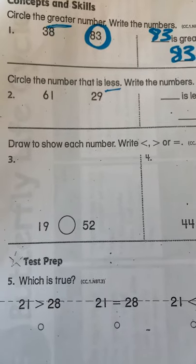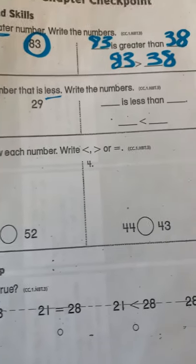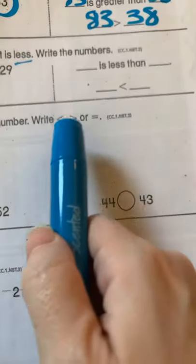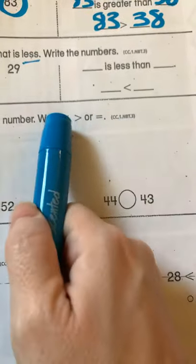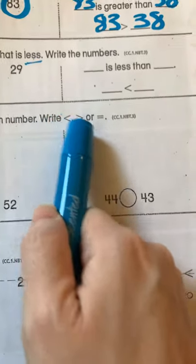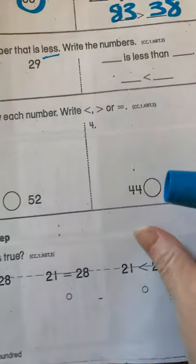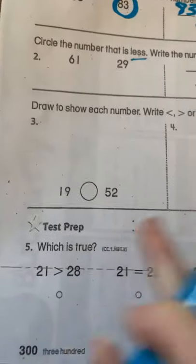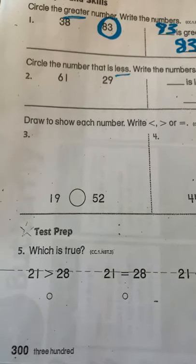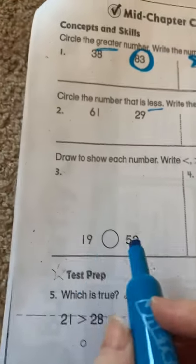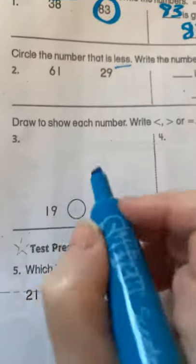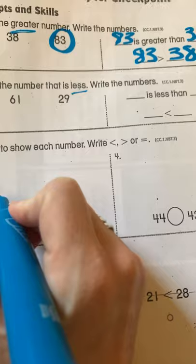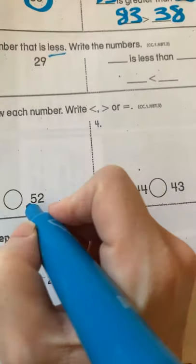Draw to show each number. Write less, greater, or equal. Remember, think of this one as an L for less, okay? First thing you're going to do is draw. Okay? So we have 19 and 52. We draw one ten stick, and then we draw one, two, three, four, five, six, seven, eight, nine.